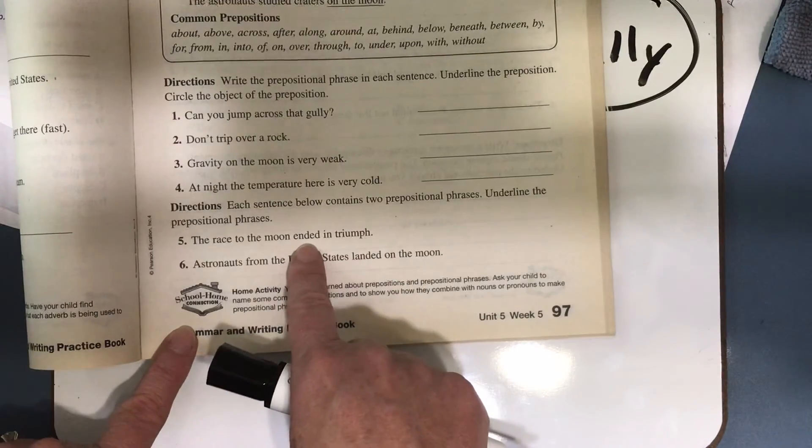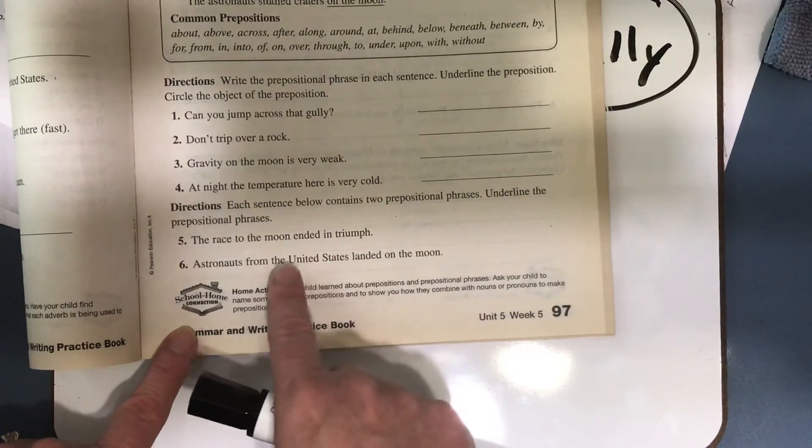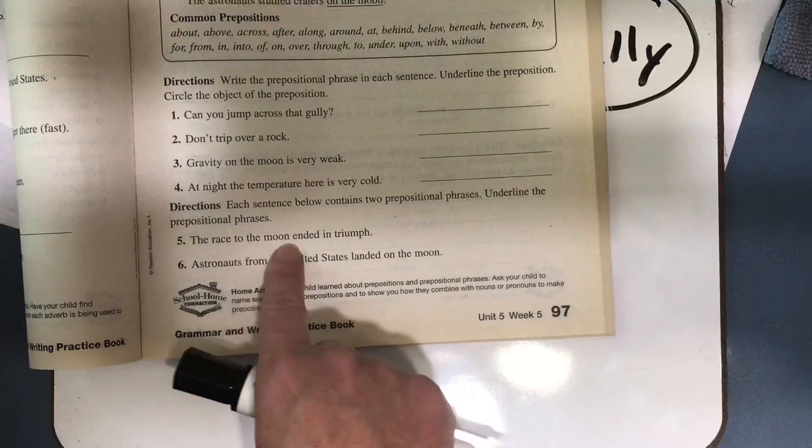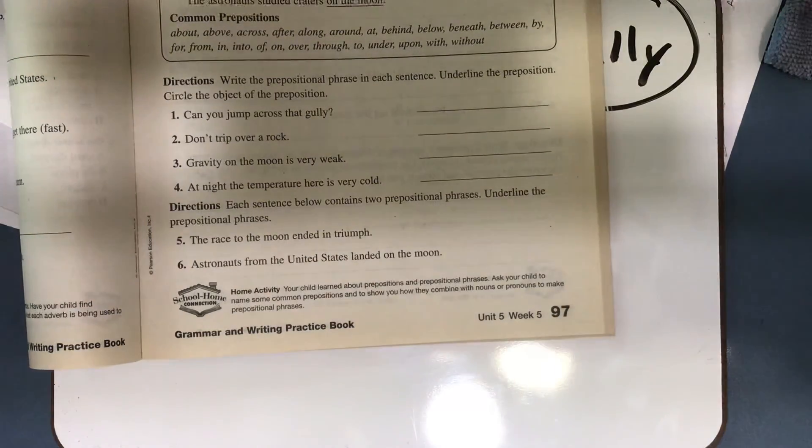Okay, and is is the verb. It is not part of either prepositional phrase. To the moon, in triumph. All you have to do is page 97.